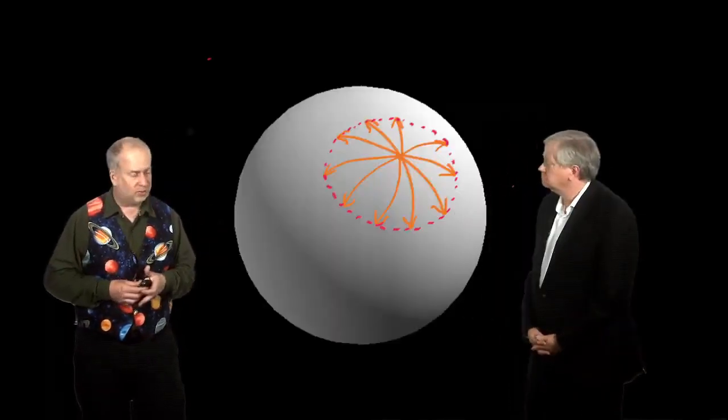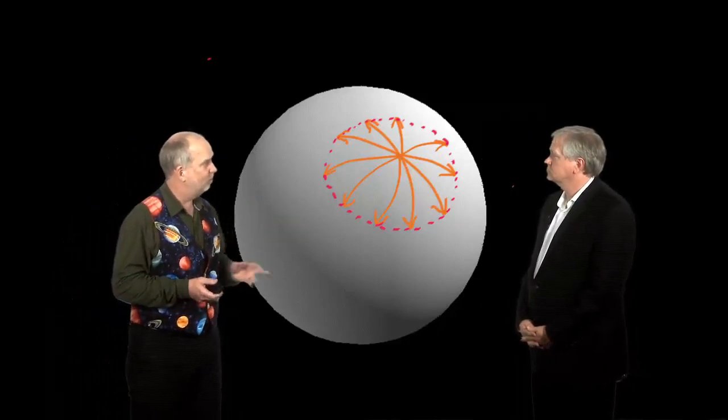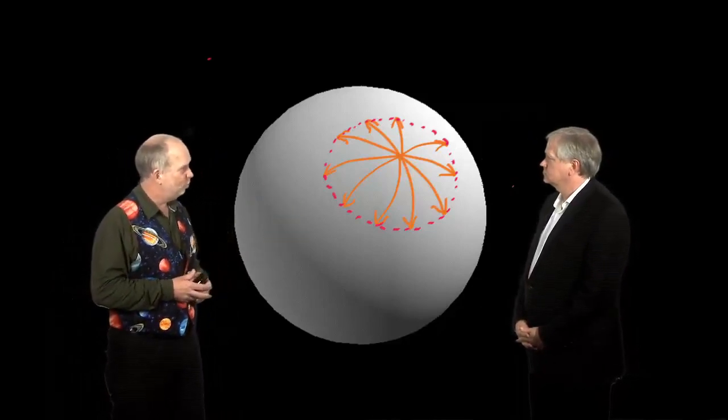The universe could be a spherical geometry something like this, in which case pi is less than 3.141592, and eventually if you go far enough you go all the way back.